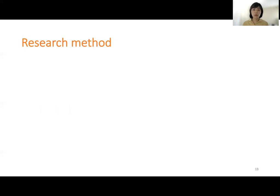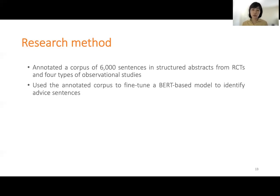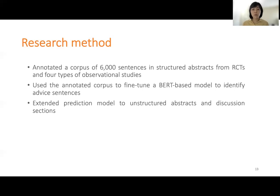In the following slides, I'm going to describe our research methods. Sentences containing health advice account for a very small portion in medical literature, so to avoid annotating a large number of non-advice sentences, we annotated a sample of sentences from conclusion subsections of structured abstracts. Study designs can lead to different levels of evidence, so we sampled equal numbers of sentences from RCTs and observational studies and labeled each sentence as no advice, weak advice, or strong advice. After corpus construction, we fine-tuned a BERT-based model and extended it to unstructured abstracts and discussion sections.